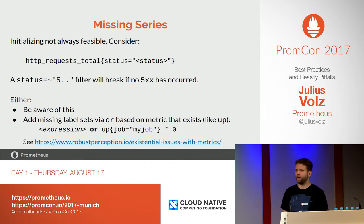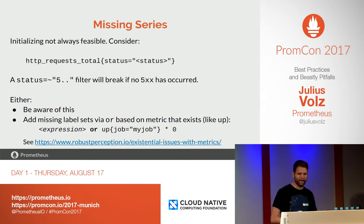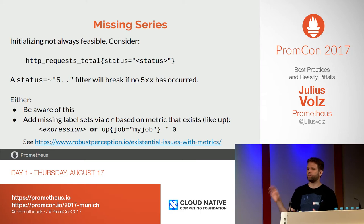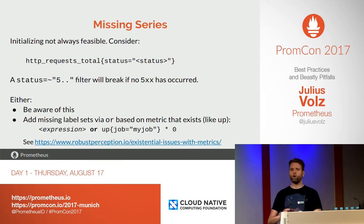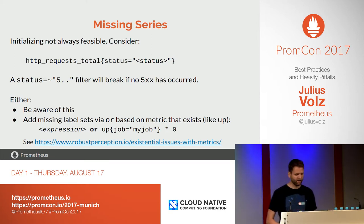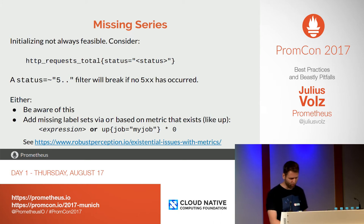Sometimes this is not feasible — for example with HTTP status codes, while you could go through hundreds of status codes, you might not want to create that many series that will never be used. In this case, either be aware of the problem when looking at a graph — it might be empty where you'd expect a zero rate — or you can use the `or` operator in different combinations depending on your expression. You can join in series for a metric name which you know will always exist, like the up time series for the same job. There's a nice blog post from Robust Perception about this.